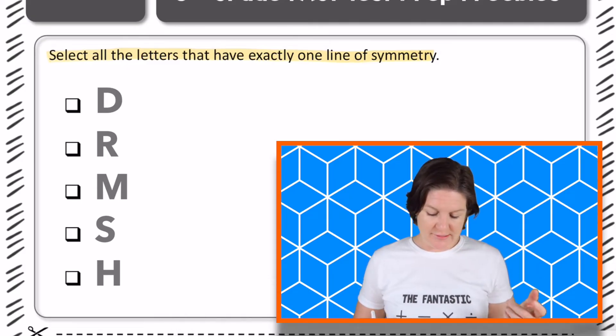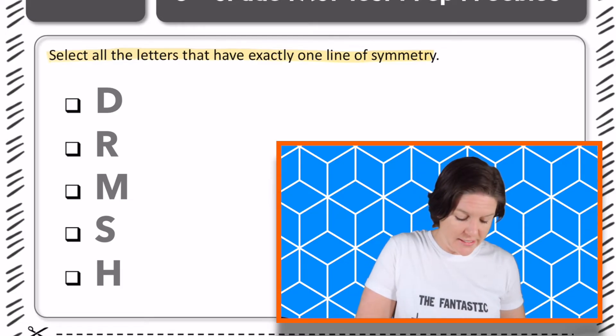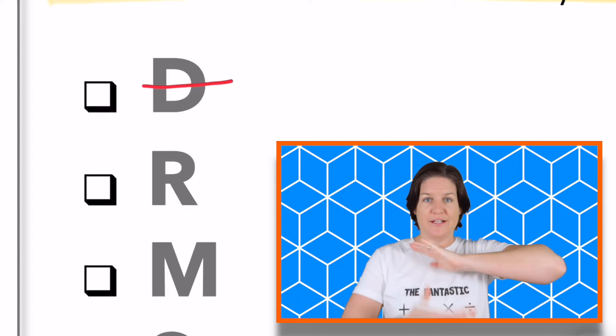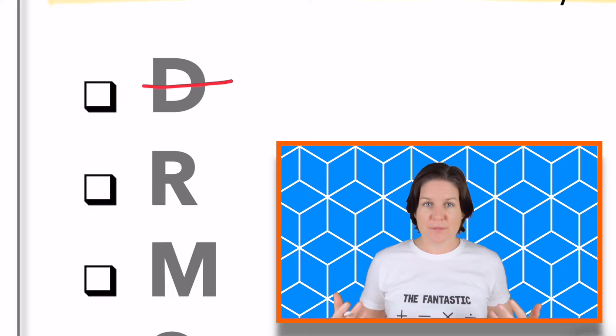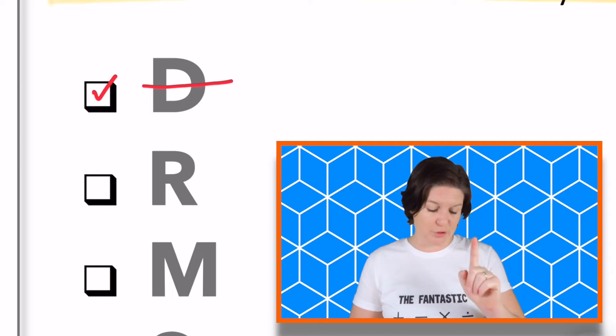When we're looking at this, we have the letter D. The letter D has a line of symmetry right here. If you were to fold those two halves together, like top to bottom, they would have mirrored images. So yes, this one has exactly one line of symmetry.